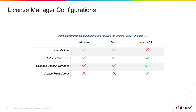So if you're trying to run Fidelity Pointwise on a Mac computer, you're going to need to at least have access to a Linux operating system computer that can run the Cadence License Manager and the License Proxy Server.